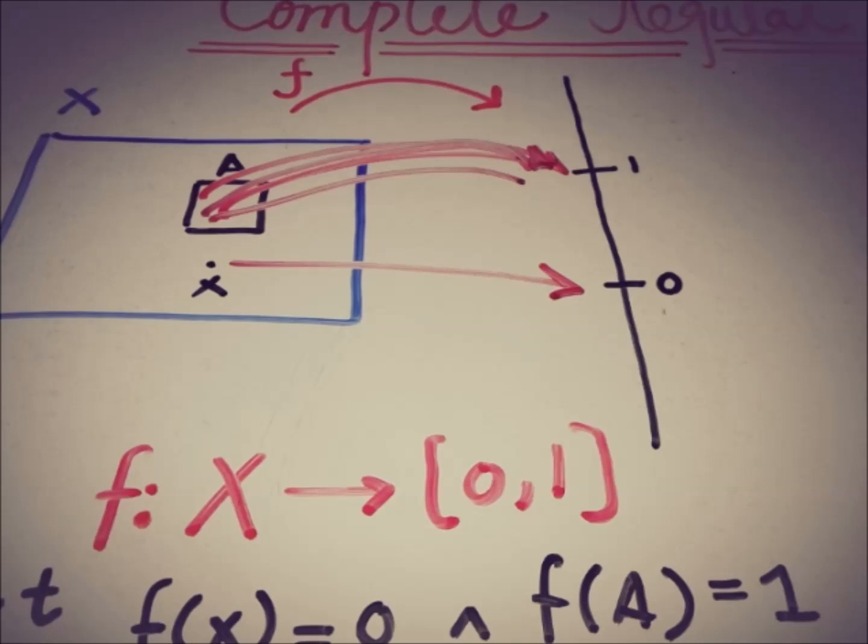So this is the definition of a completely regular space. And this function f(x) = 0 and f(A) = 1, where f from X to that closed interval [0,1] is also a constant function and it's also a continuous function by definition.